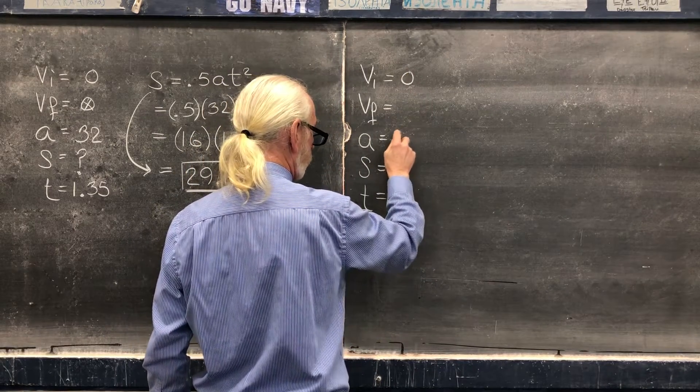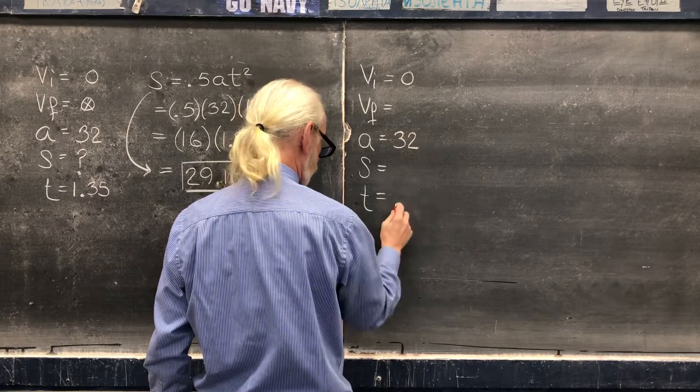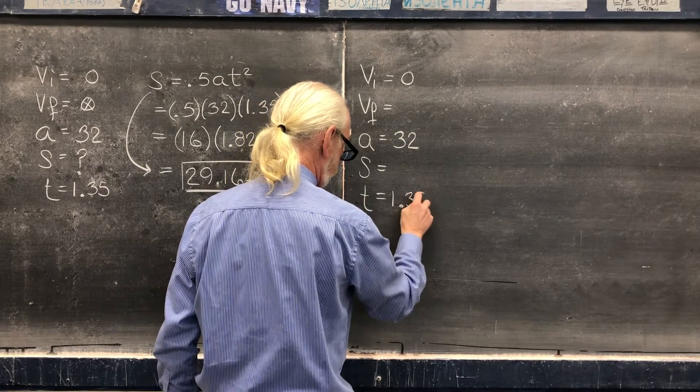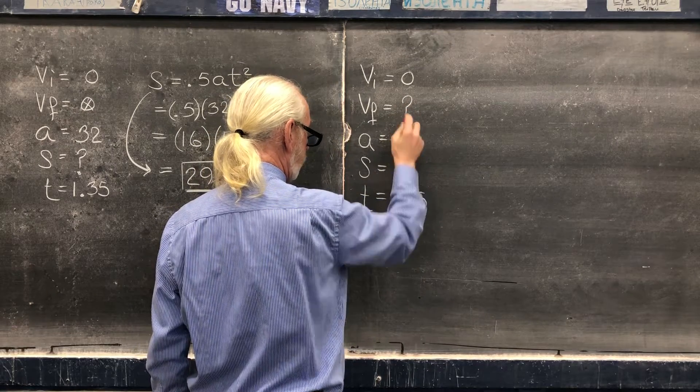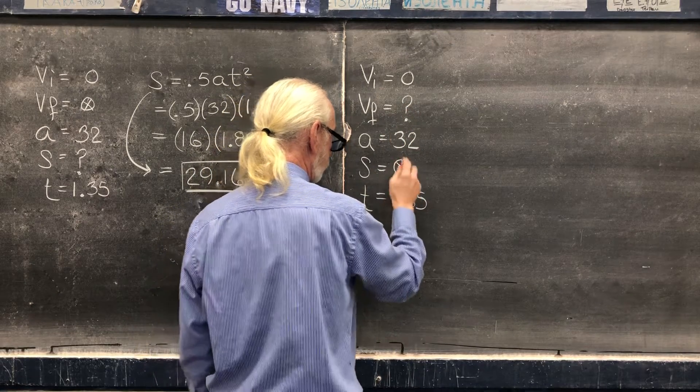So the original data is: initial velocity is zero, acceleration is 32, time is 1.35. And now the question is how fast is it going at impact - that makes displacement the odd man out.